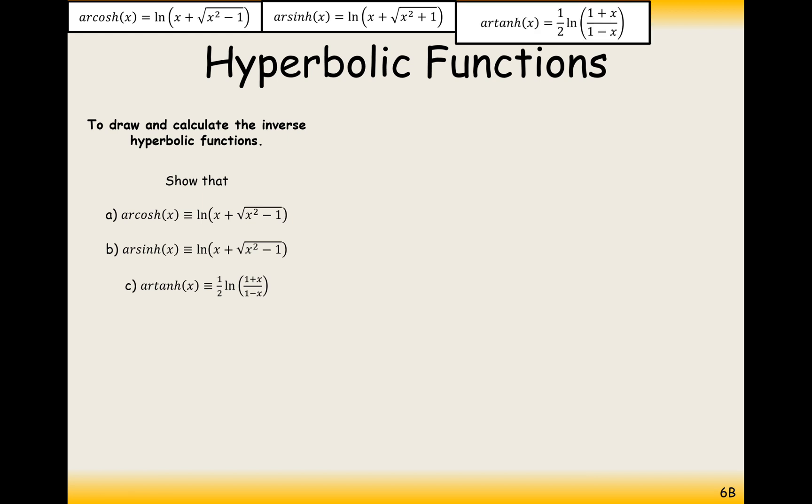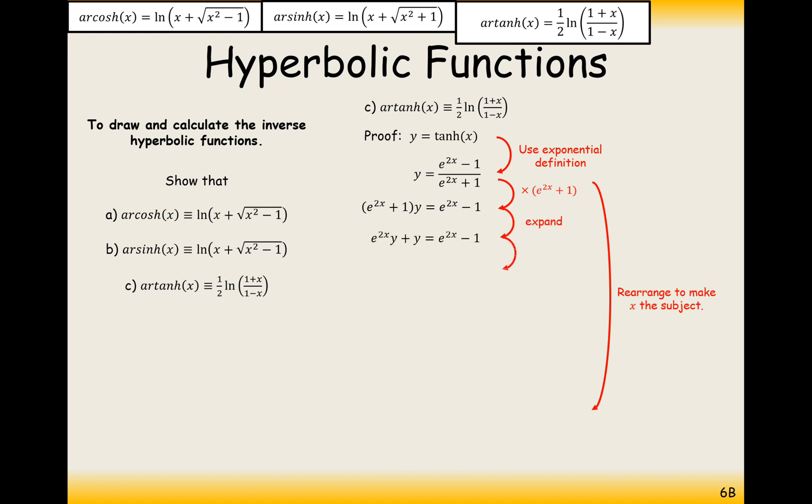And part C, the artanh, well, it looks a little bit different, so you're probably going to have to do it in a slightly different way. Again, though, start with y equals tanh and use the definition there, e to the 2x minus 1 over e to the 2x plus 1. Multiply both sides by the denominator of that fraction. Expand your brackets and then group all your e to the 2x on one side, anything else goes on the other side. So I've decided here to move the e to the 2x on the right, the other things can move on to the left. That's just to reduce the amount of negatives I've got in my expression here. Factorize out the e to the 2x and then divide by the bracket you've then got. Then take the logarithm, then divide by 2, and there you are, you're at your answer.